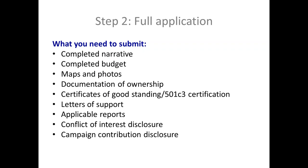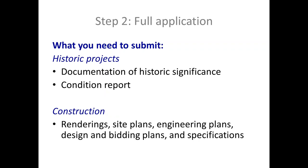For the full application — the last application you need to develop for projects joined between community members and the city — there will be a discussion on how you want to submit the project. You have to submit a complete narrative and budget, maps, photos, documentation of ownership and certificates of good standing, letters of support, any applicable reports including a Phase 1 if it is a construction project, and a mandatory financial disclosure form.